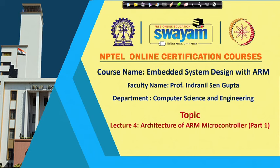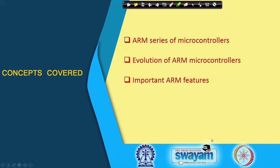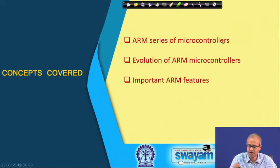In this lecture we shall be starting our discussion on ARM microcontrollers: what their architecture is like, what their specific features are, and how they are different from earlier generation microcontrollers. The topic of this lecture is the architecture of ARM microcontroller, Part 1. We shall be covering some general ideas about the ARM series of microcontrollers, how they have evolved, and some of the important architectural features.